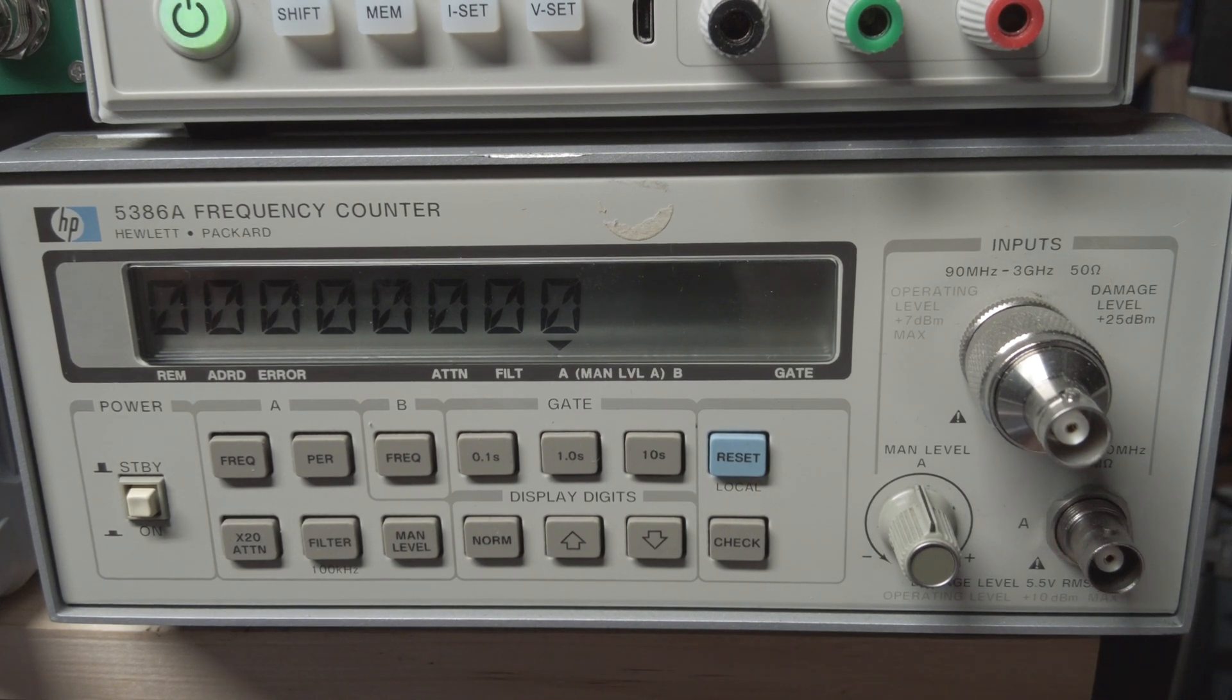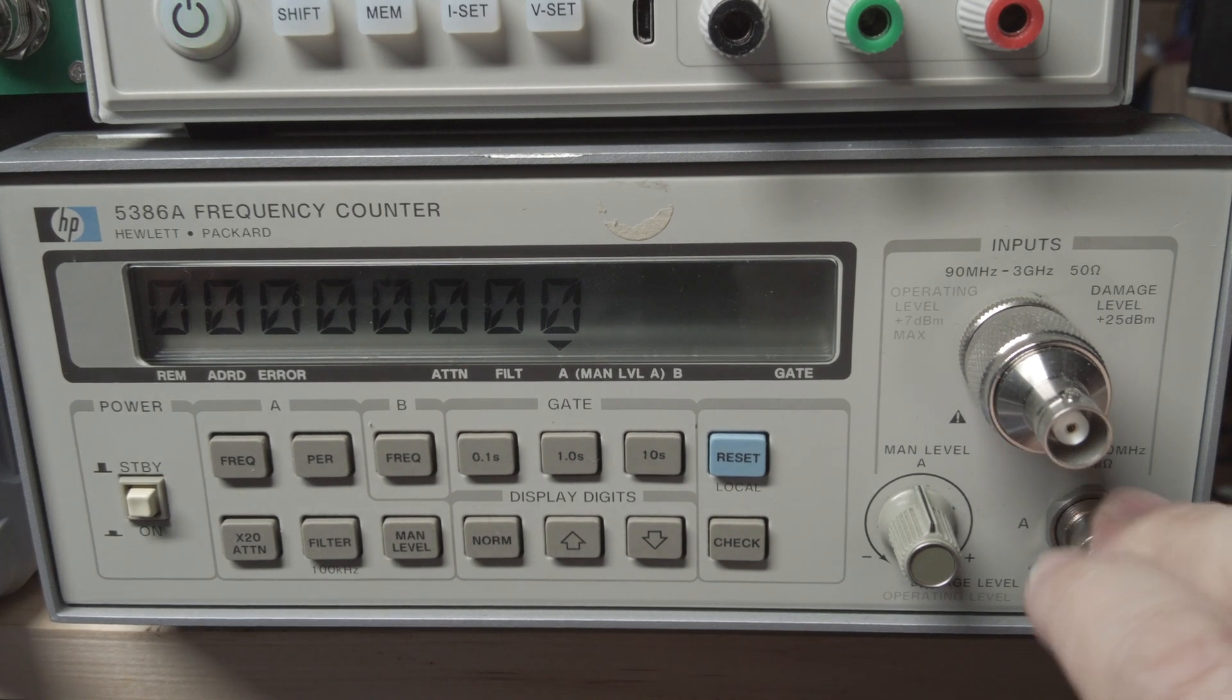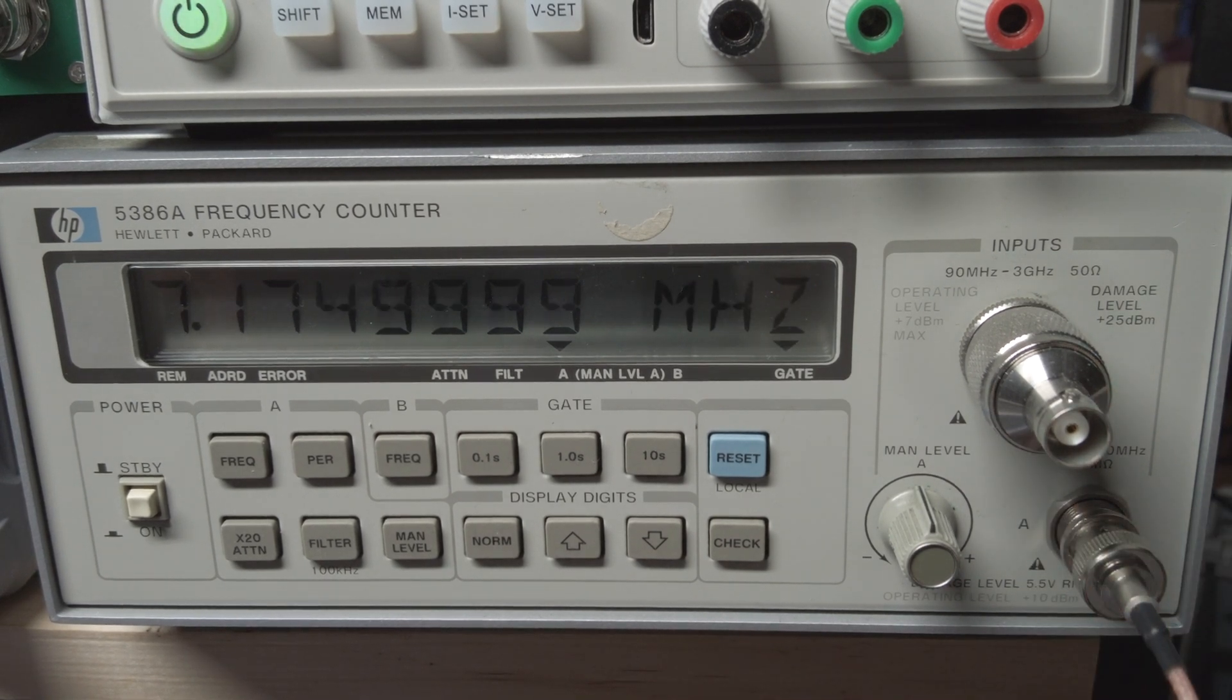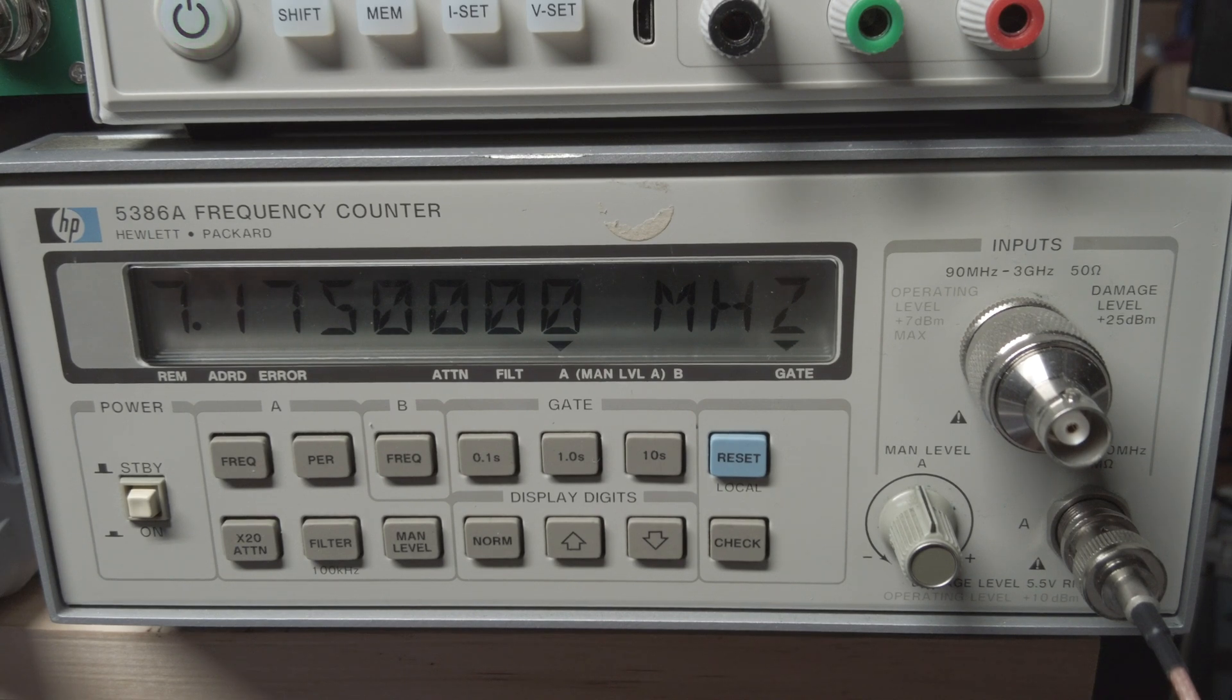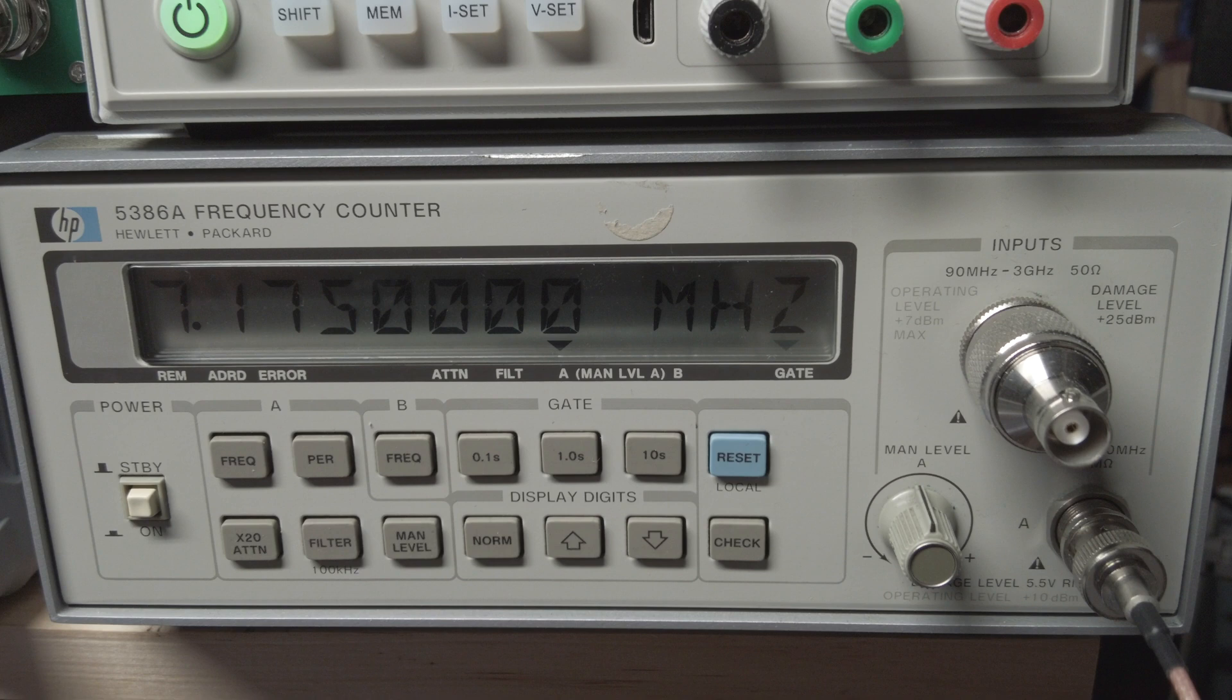So we're going to take the output of that signal generator and put it into the input of the frequency counter. And we can see that it is in fact putting out a signal that's 7.175 megahertz in frequency. So now we know we're generating RF signal that's 7.175 megahertz.